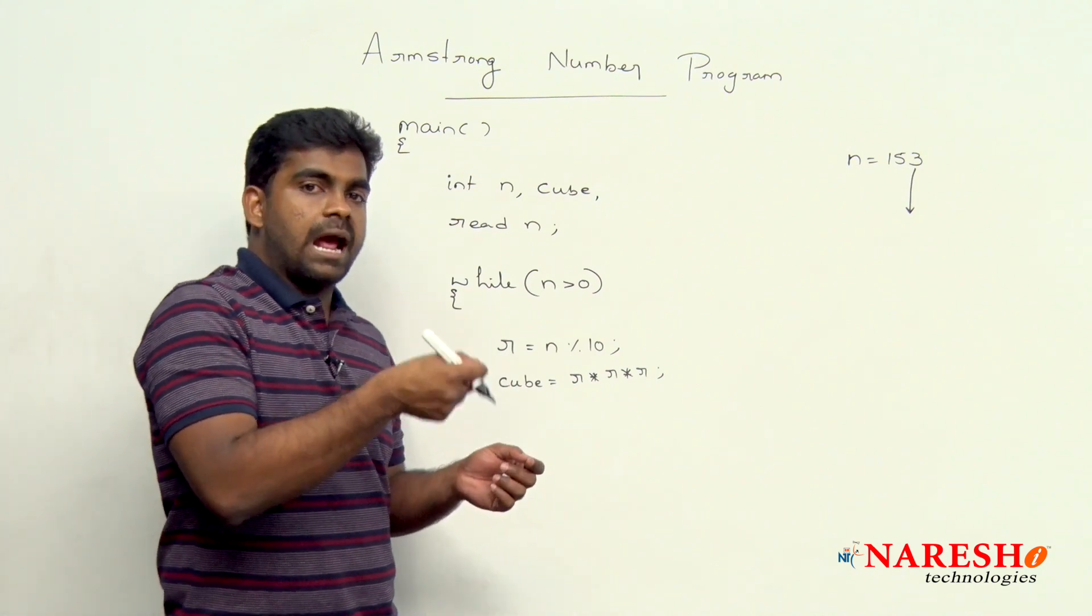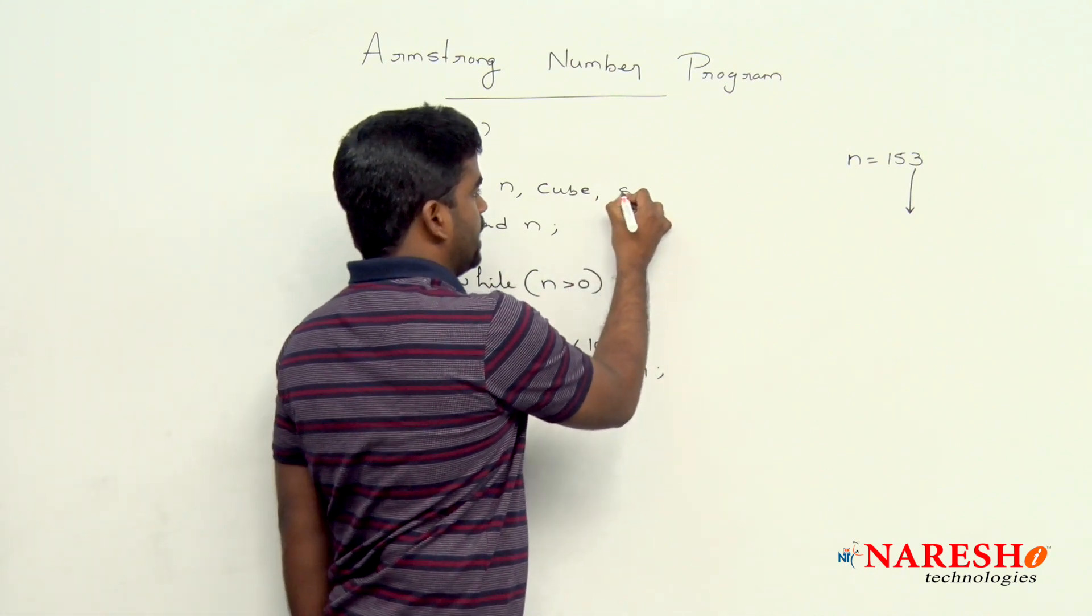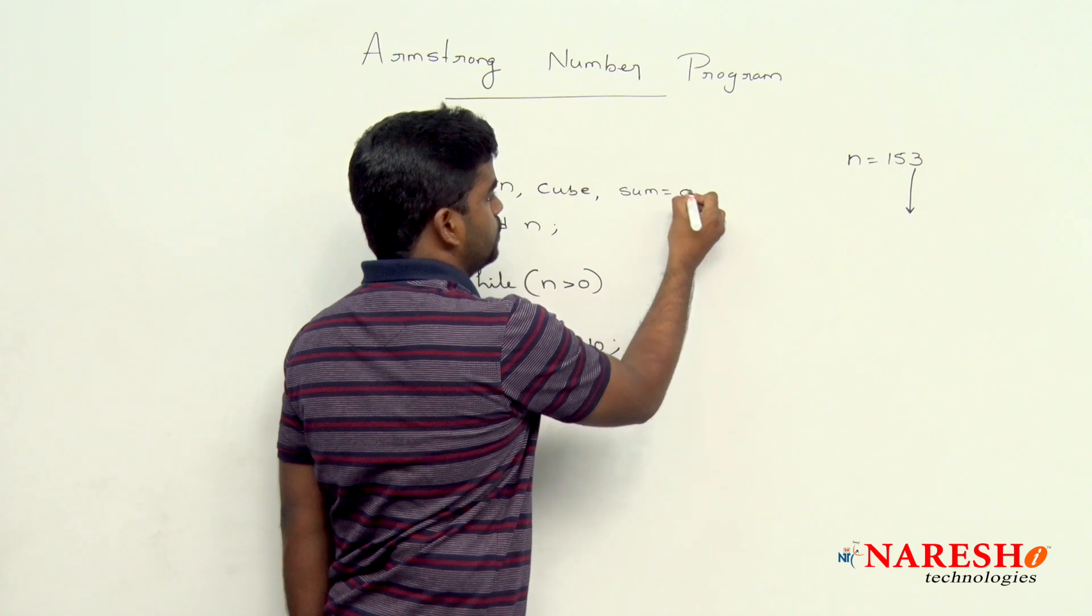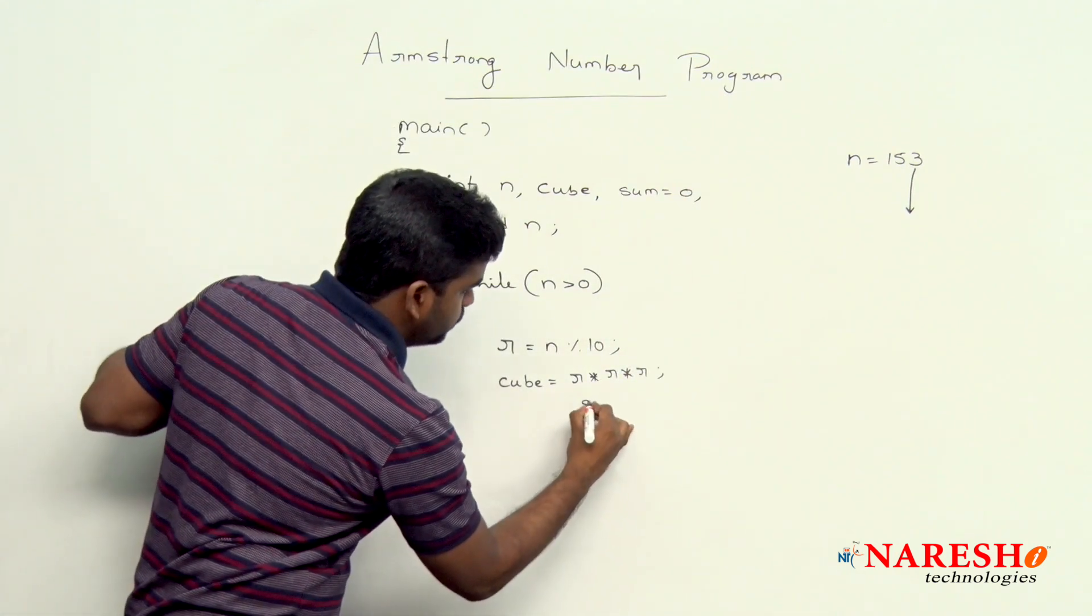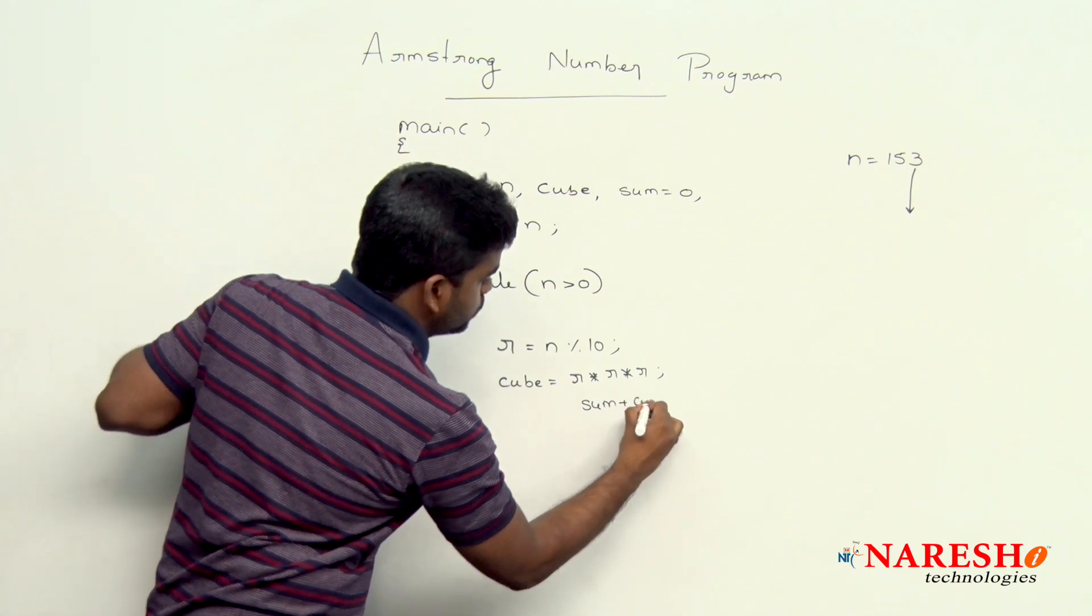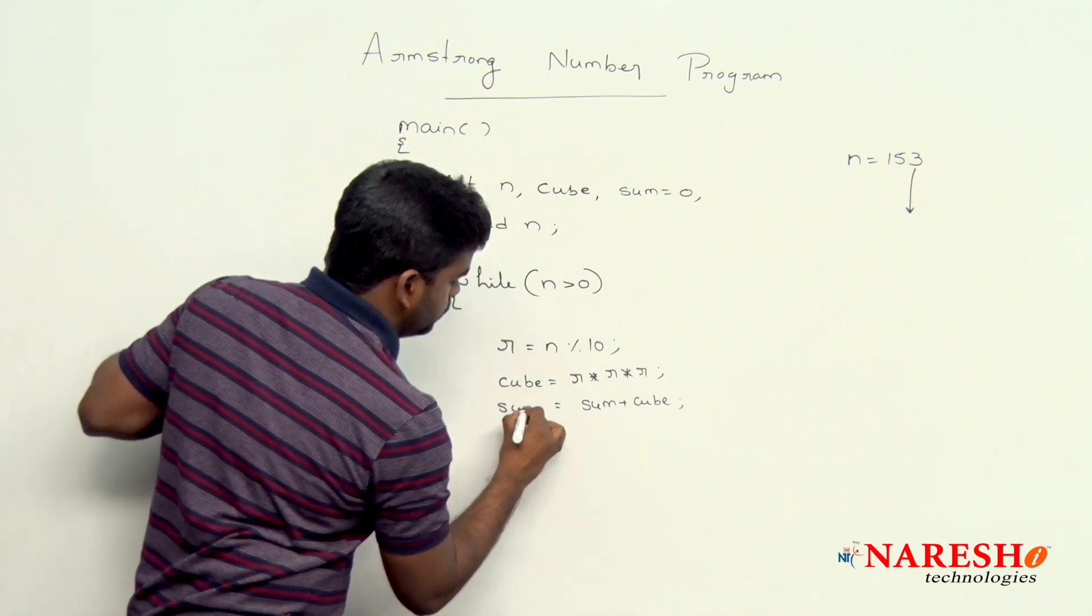Now, that cube value we are adding to sum. We are taking one value sum equal to 0 initially. The cube value we are adding to sum.